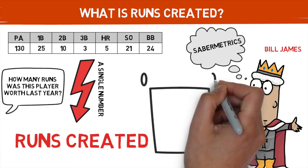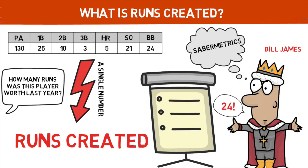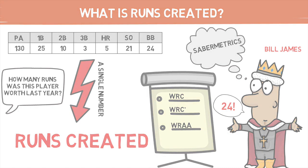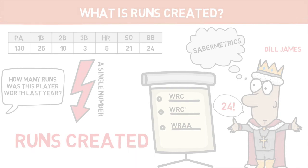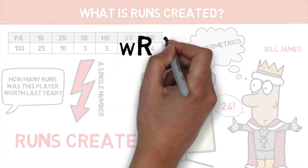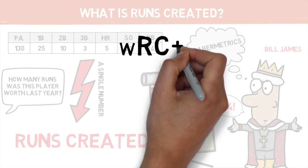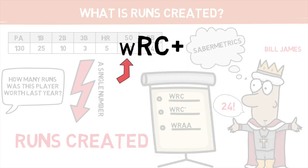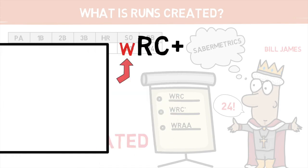Since the creation of this statistic, it has evolved in several ways. Stats like weighted runs created, weighted runs created plus, or weighted runs above average are all stemming from this original stat. Before we jump into what all of those statistics are and how they're calculated, I wanted to take a second to break down the form of abbreviation used in a lot of these new-age statistics. This is the same stat as runs created, but with two different adaptations.